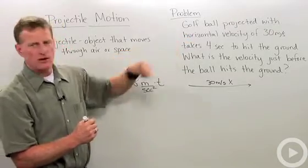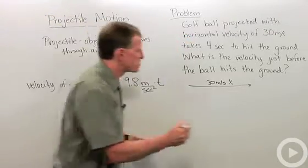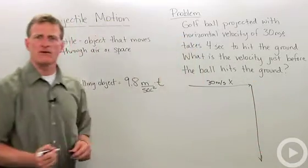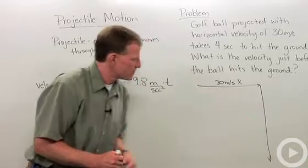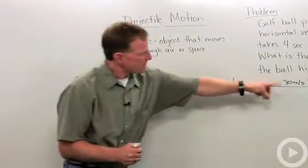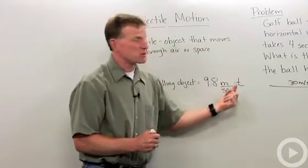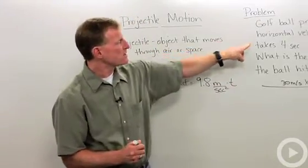Now, once I hit it though, gravity is pulling it down. So I've got this force pulling down. And that force, what's that velocity going to be? Well, I'm adding up velocities here. So it's going to be 9.8 meters per second squared times time. In this case, 4 seconds.